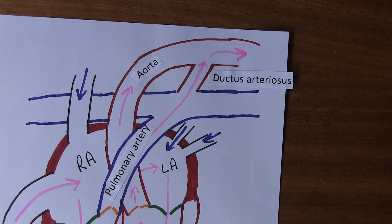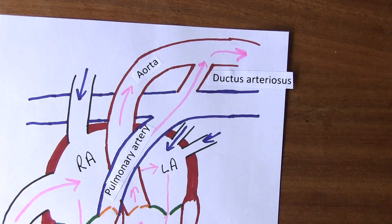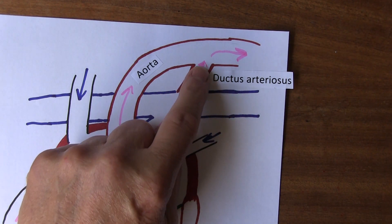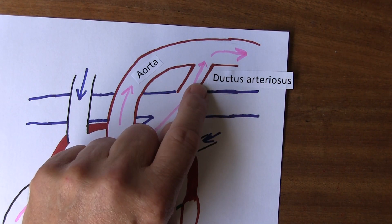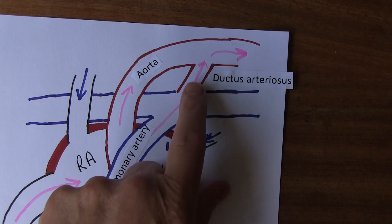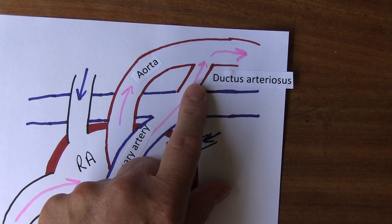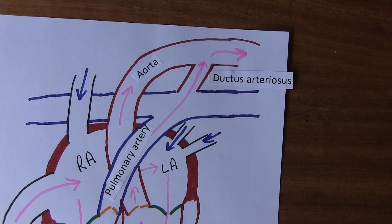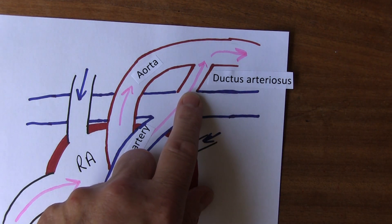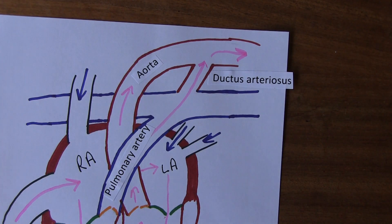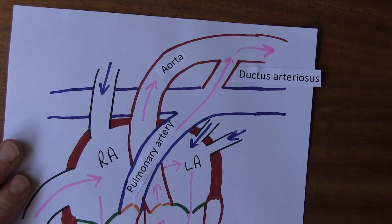The tunica media in the ductus arteriosus — the middle layer of the arterial vessel — is largely smooth muscle, making it a muscular artery rather than an elastic artery. It is very important to keep it open in fetal life, probably maintained partly by the action of prostaglandins, but we need it shut shortly after birth. The ductus arteriosus does indeed start to close immediately after birth, but there is actually some blood flow for about a week.